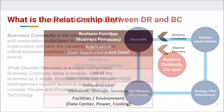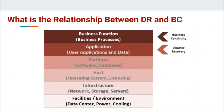This diagram illustrates that point. Here we see the technology stack. We start at the bottom with our facilities — that's our actual data center power and cooling. Then the infrastructure layer: network, storage, and the actual servers. On top of that is the operating system level, software databases, and infrastructure services — Active Directory would be kind of in this bucket too.